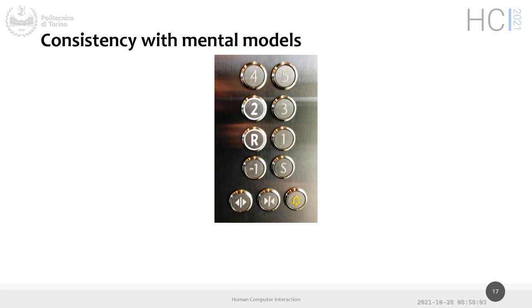Another example: elevator button interfaces. A lift goes up and down, so you have a set of buttons on a vertical or horizontal strip. When space requires, they're packed into a 2D grid. We can follow patterns: left to right, bottom to top. So 5, 4, 3, 2, 1 looks okay. Then we have R, S, and minus 1. R is probably the ground level in some languages, S should be below ground, and minus 1 is also below ground — something in the layout should tell me that minus 1 is lower than S, but it leaves a question mark in mind rather than certainty.